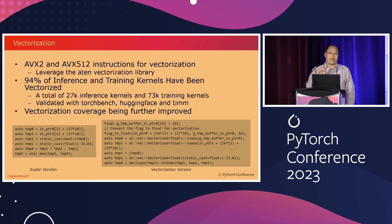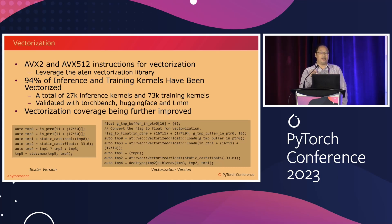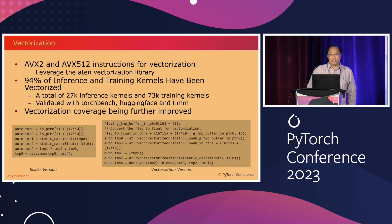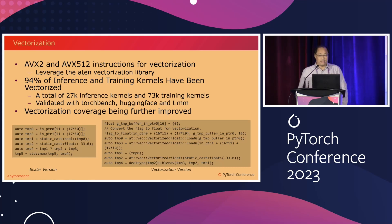Vectorization is a key optimization applied to the loop body, because vectorizing enables multiple data points to be processed with a single instruction. We leverage the ATen-VEC abstraction to ensure the generated code is compatible with various CPU architectures. More than 94% of the generated kernels have been vectorized as measured on the three benchmark suites, and we are actively working to further improve it. As shown in this example, the left-hand side is the scalar version of the generated code, and the right-hand side is the vectorized version, using AVX512 to vectorize mask operations.